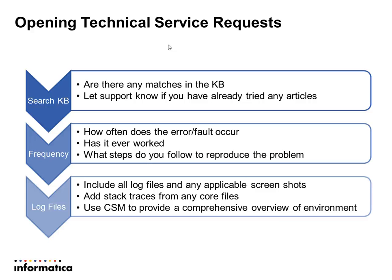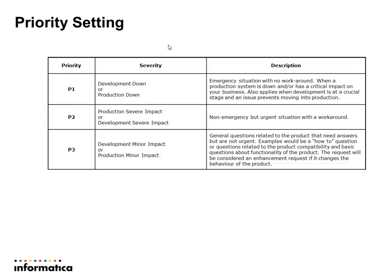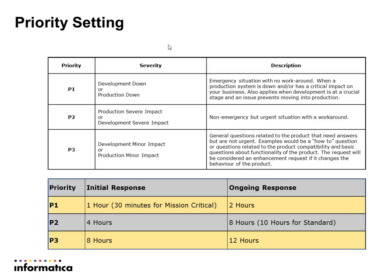If it's something that can be repeated regarding behavior, we would like to know if you have log files or other information before you contact Informatica support. These are the priorities for opening a service request: P1 is production down or development down; P2 is production or development severe impact; and P3 is minor impact. For AddressDoctor, P1 likely means the web service is down, and P3 means particular addresses cannot be found or unexpected behavior. P2 is for P1 situations where there is a workaround. Response time for P1 is one hour initially, P2 is four hours, and P3 is eight hours. For standard support contracts, the initial response time is four hours.